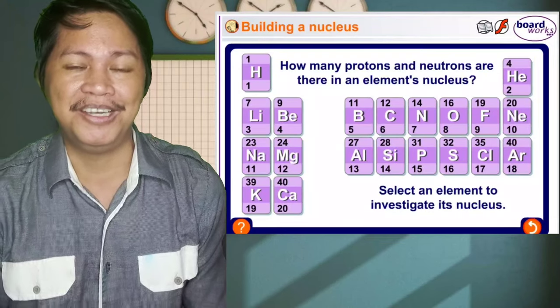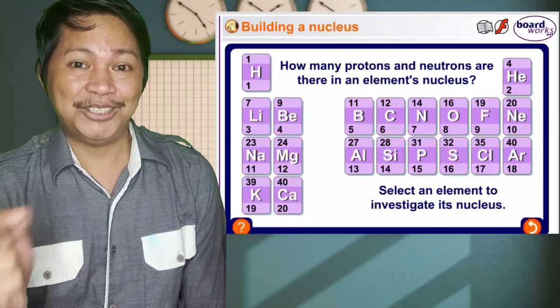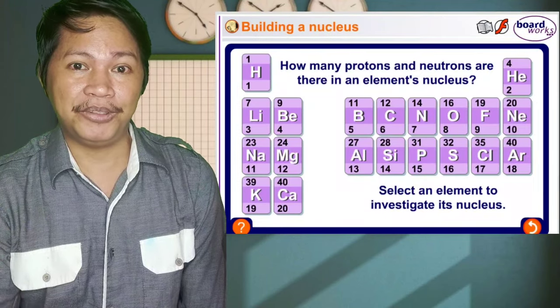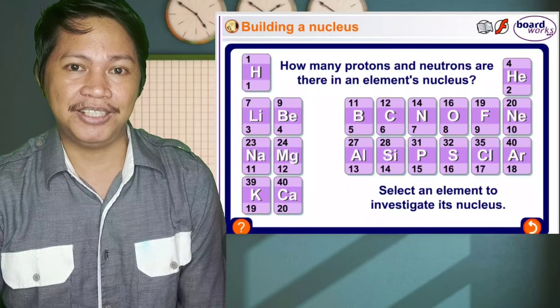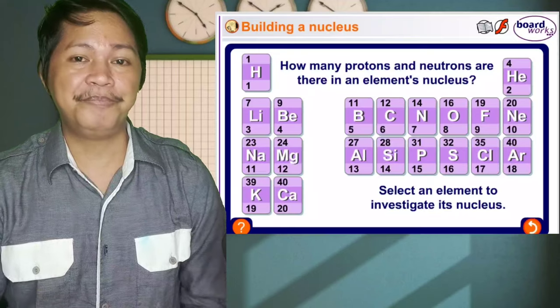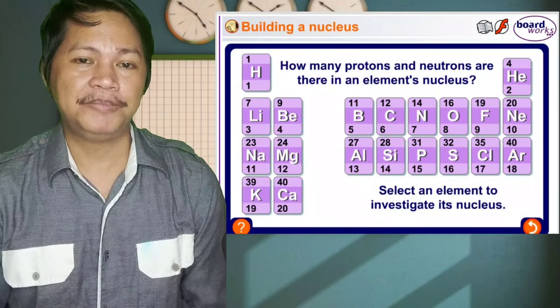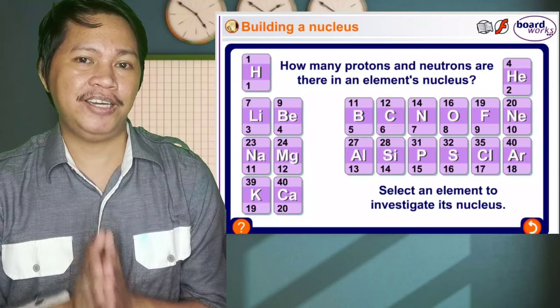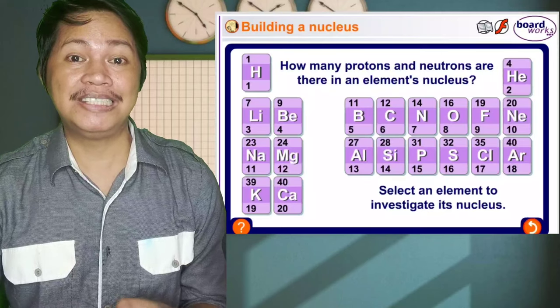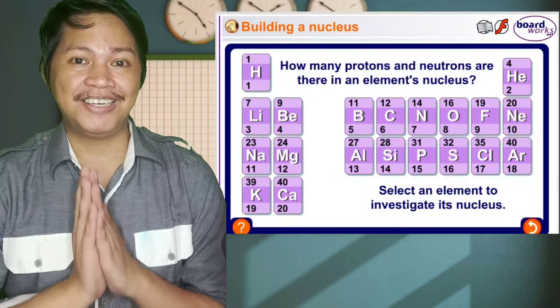If calcium has 40 mass number or atomic mass, and it has 20 atomic number or number of protons, then what would be the protons and neutrons? We have 40 for the mass number, 20 for the atomic number. So it's very clear here that 20 is atomic number, number of protons, and the number of neutrons is still 20, because atomic mass minus atomic number is 20.